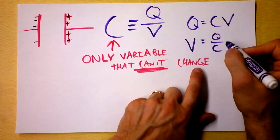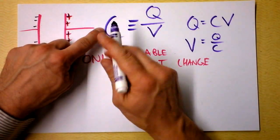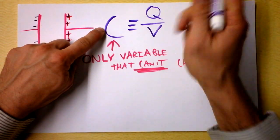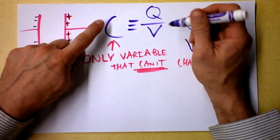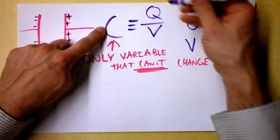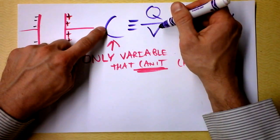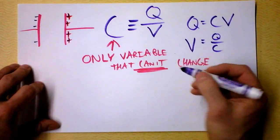So if I have a large capacitance, that means that I have to put a lot of charge on it. I have to put a lot of charge on my capacitor in order to get a certain voltage. If I have a small capacitance, then a small amount of charge will give me a certain voltage.